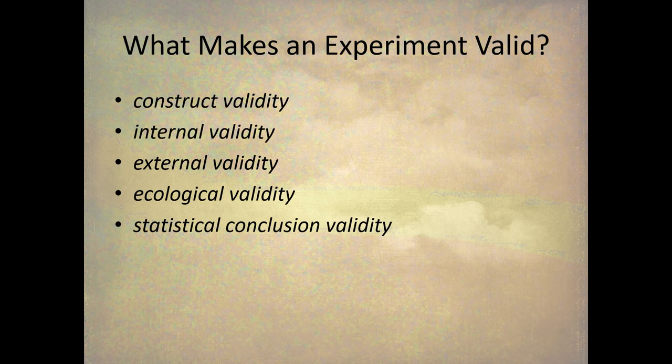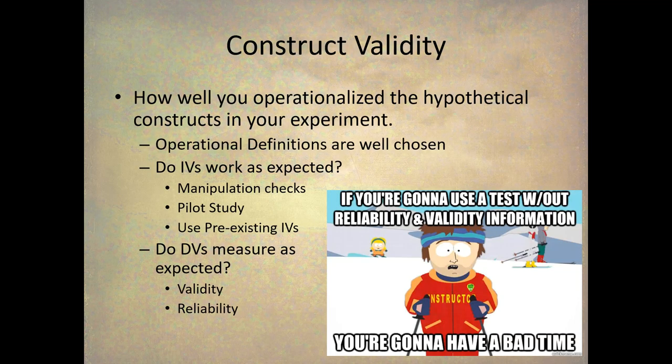The first one is construct validity, which is pretty foundational. It's whether or not your measurements are working properly. Construct validity is how well you operationally define the hypothetical constructs in your experiment. The operational definitions are well-chosen, they make sense, they're very specific and very concrete, and then they work as expected.